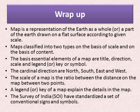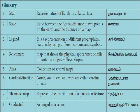Now it is time to wrap up. A map is a representation of earth as a whole or a part of the earth drawn on a flat surface according to a given scale. Maps are classified into two types: on the basis of scale and on the basis of content. The basic essential elements of a map are title, direction, scale, and legend or key or symbol. The cardinal directions are north, south, east, and west. The scale of a map is a ratio between the distance on the map and the actual distance on the ground. A legend or key explains the details in the map. The Survey of India has standardized a set of conventional signs and symbols used in maps.